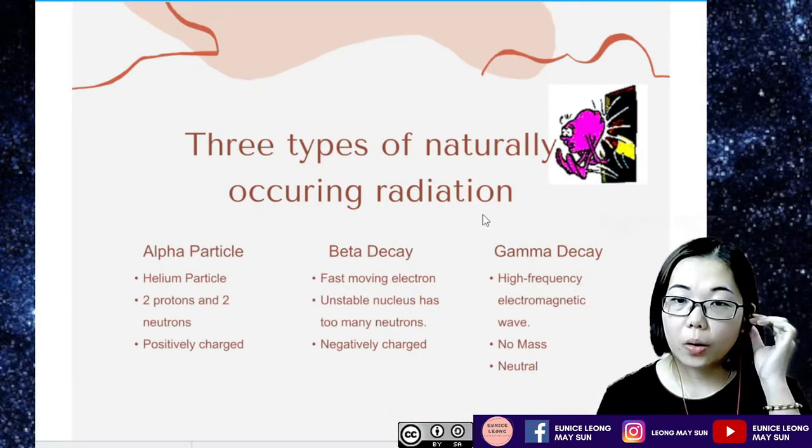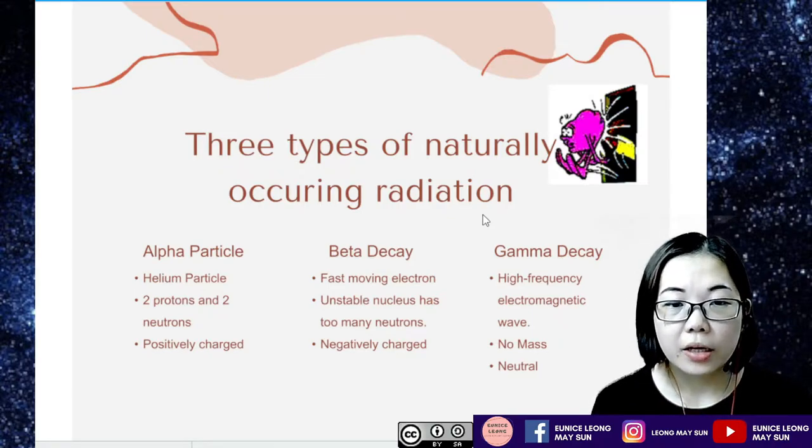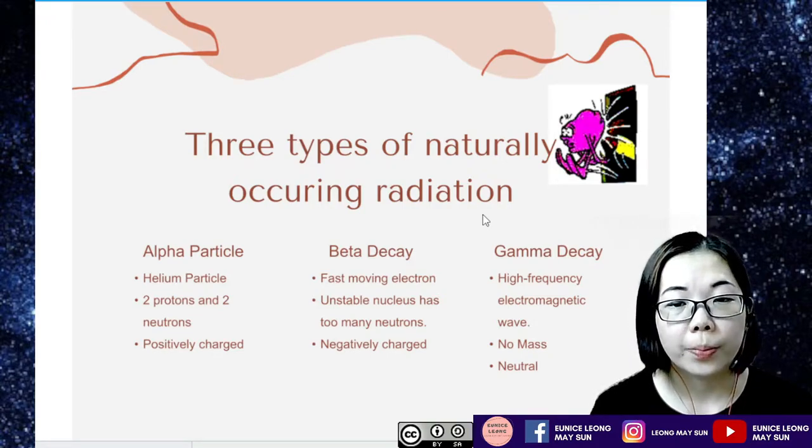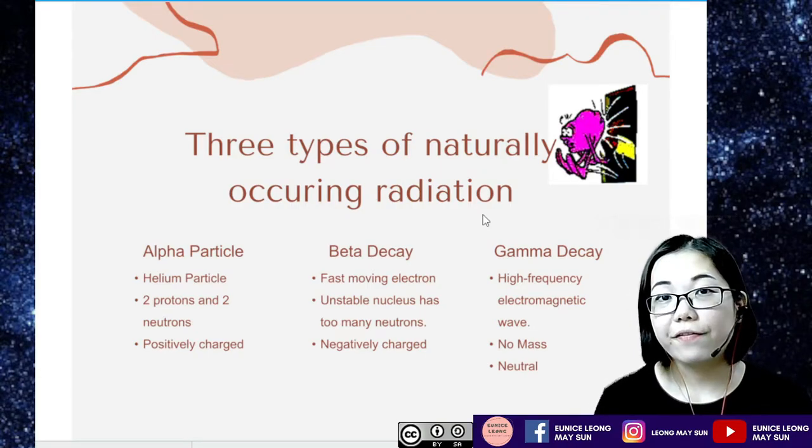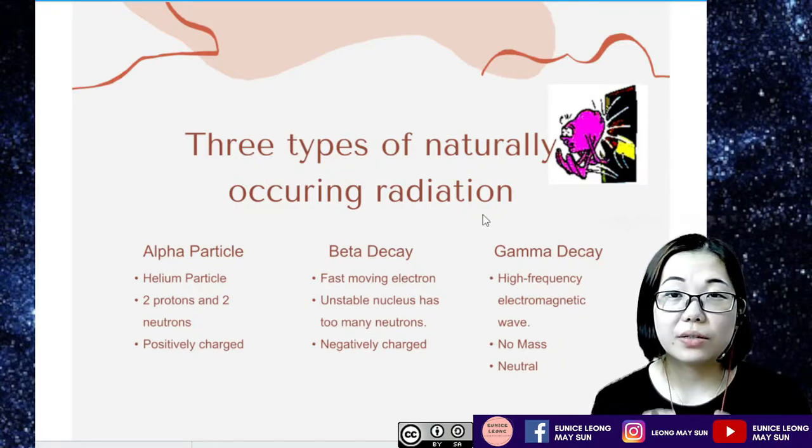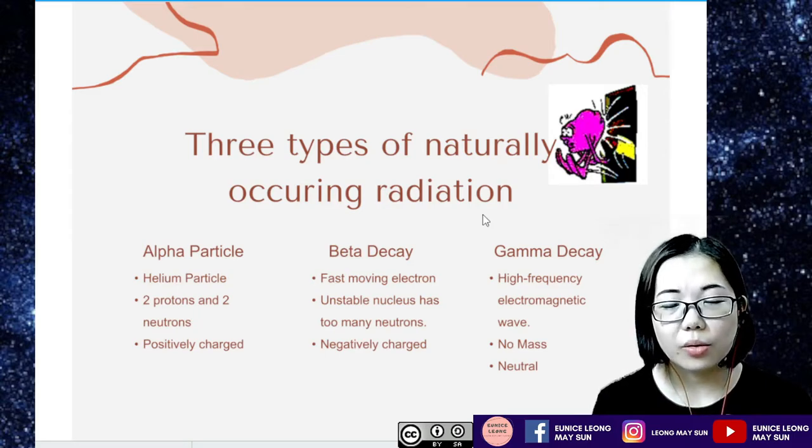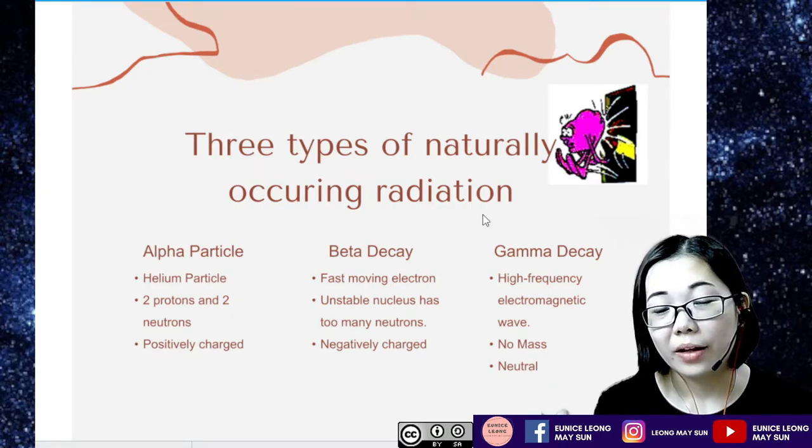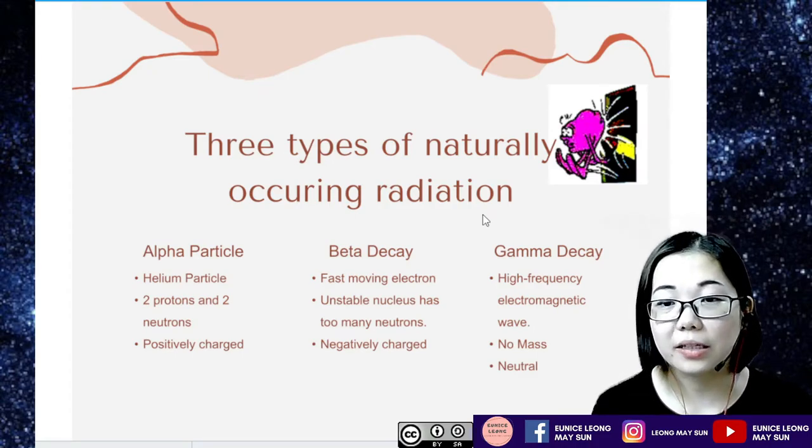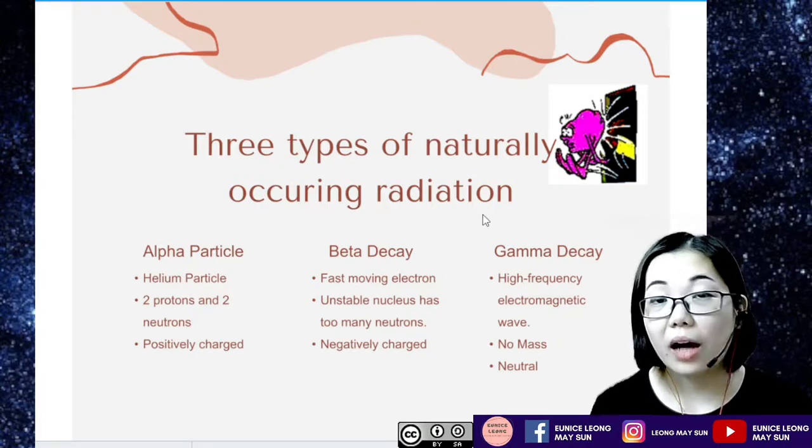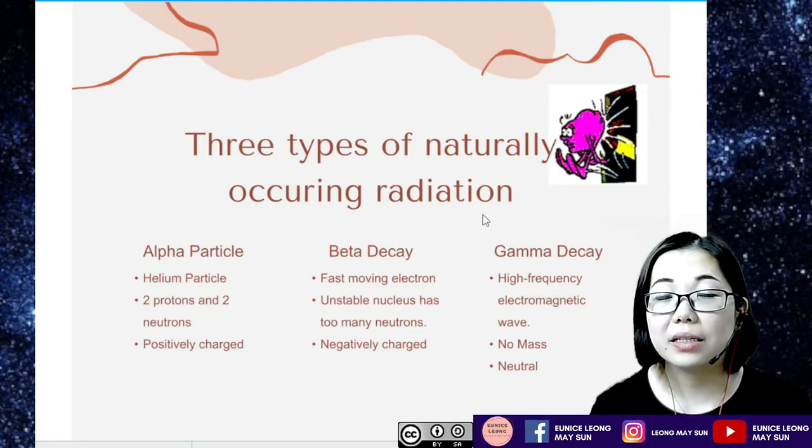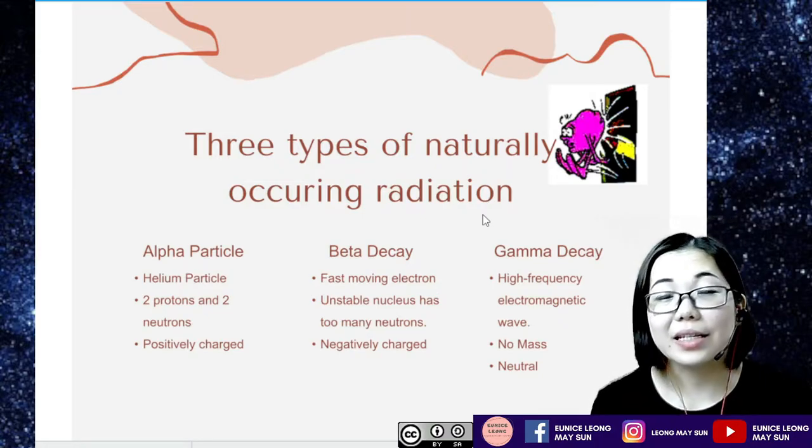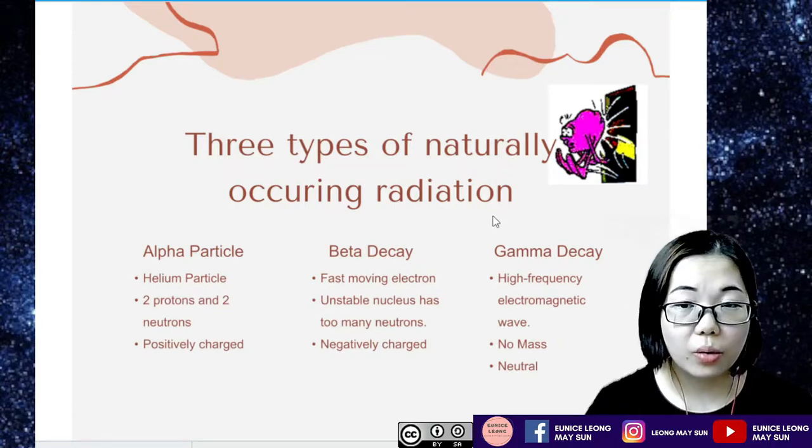So there are three types of naturally occurring radiation. We have alpha radiation or alpha particle. So alpha particle is also helium particle. It has two protons, it has two neutrons in the nucleus, and it's positively charged. The next radiation is actually beta decay. So it is actually a fast-moving electron and it is actually because the nucleus is very unstable due to too many neutrons. So because there's too many neutrons, the neutrons actually split to become one proton and one electron and that electron gets kicked out from the nucleus. So the beta decay is a negatively charged particle. Now the last radiation is gamma decay or gamma radiation. And gamma we've learned before in the electromagnetic spectrum in wave and it's a high frequency electromagnetic wave. So it is massless because it's a wave, it's an energy. And it is neutrally charged. There's no charge for gamma decay.